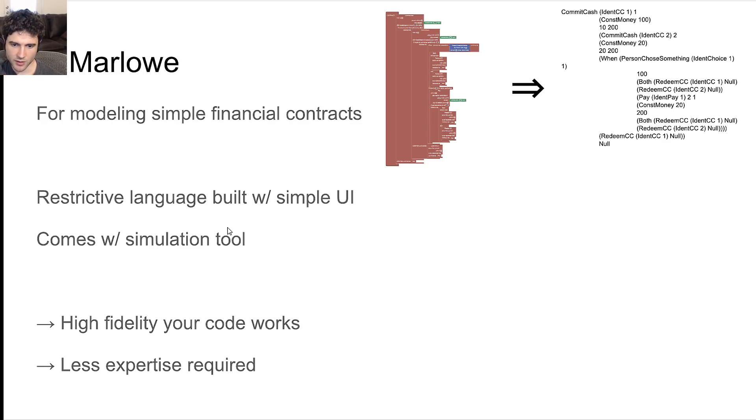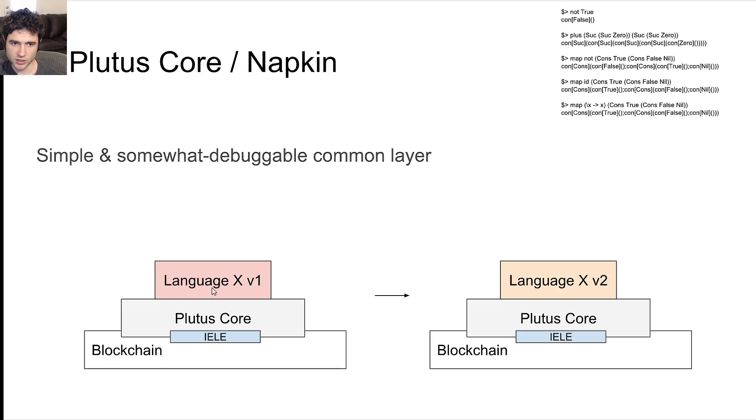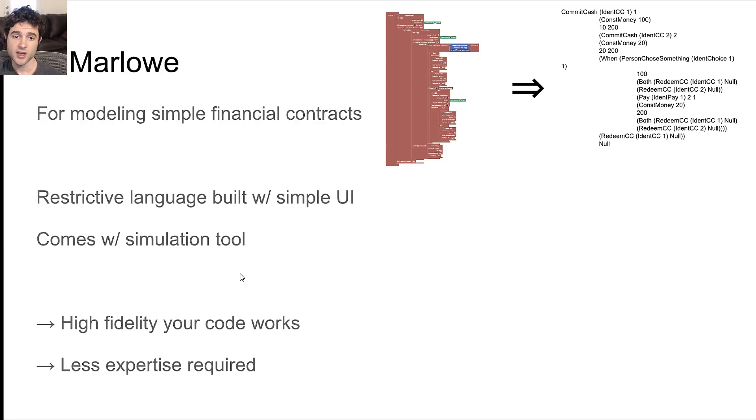And lastly I want to talk about Marlowe. So Marlowe is a different language that also compiles to Plutus Core. Marlowe is supposed to be like a very high level language. So you don't really need to know how to be a programmer. As long as you want to model a very simple financial contract, you'll be able to do so with these drag and drop boxes. You just modify this UI and create these drag and drop boxes, which eventually becomes represented by this text here, which then compiles down into Plutus Core. And so this allows you to build these fairly simple smart contracts without having to worry about actually making coding mistakes, without having to require engineering expertise to the same degree.